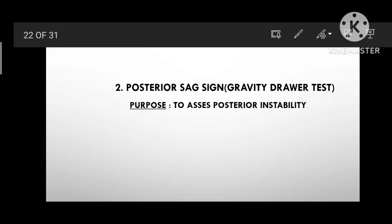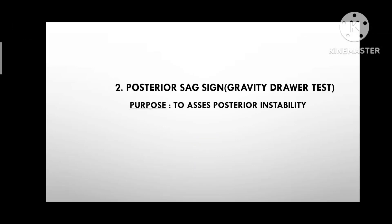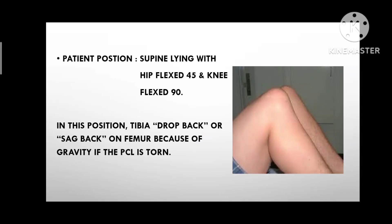Posterior Sag Sign / Gravity Drawer Test. Purpose: to assess posterior instability. Patient Position: supine lying with hip flexed 45 degrees and knee flexed 90 degrees. In this position, the tibia drops back or sags back on the femur because of gravity if the PCL is torn.